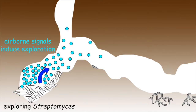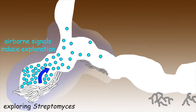TMA appears to be produced at the onset of exploration, and it serves as a tool for both communication and cooperation, as well as competition. It raises the pH in the vicinity of the producing colony, and this change in pH can be recognized by more physically separated Streptomyces, signaling them to begin exploration.